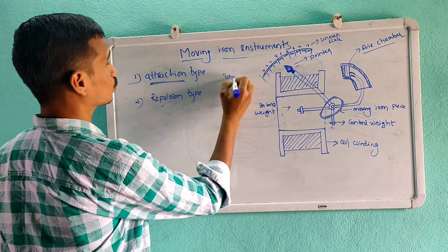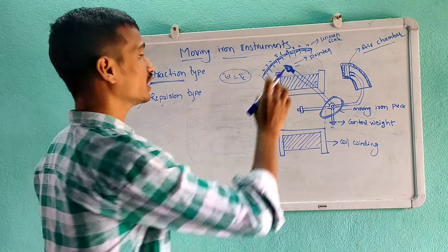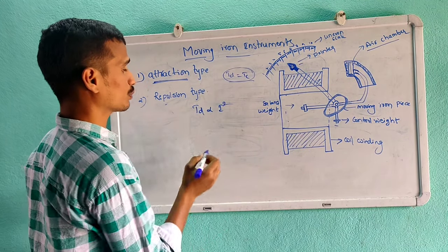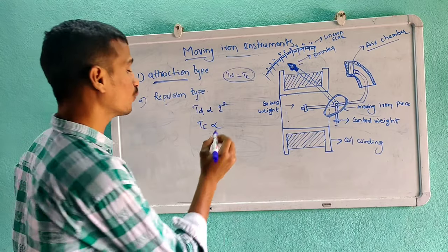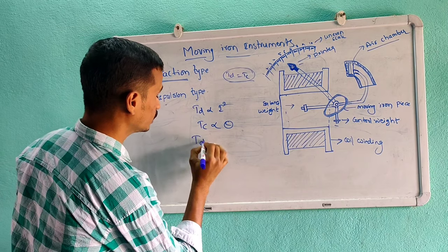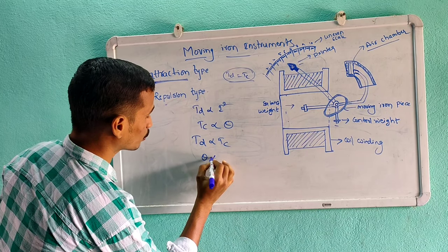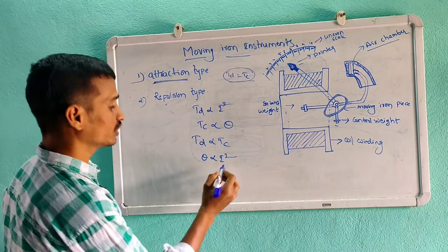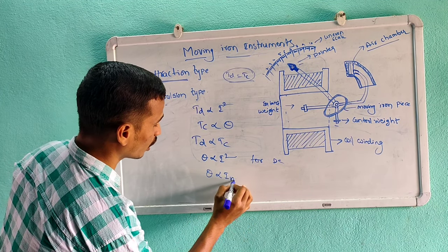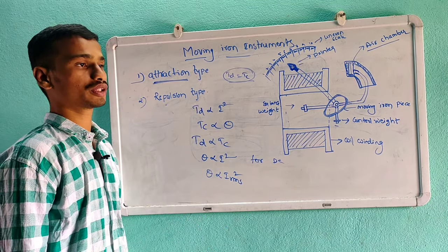The controlling torque equals the deflecting torque at steady state. The deflecting torque is proportional to I-squared. The controlling torque is proportional to the angle of deflection, so theta is proportional to I-squared. For AC, the deflecting torque is proportional to I-RMS squared. This is about attraction type moving iron instruments.